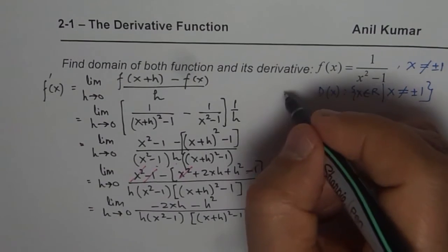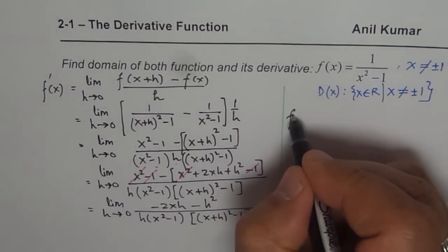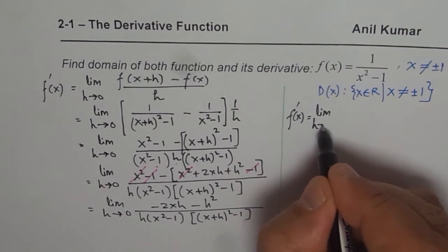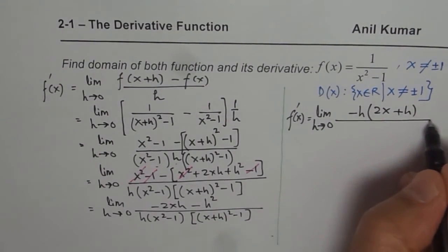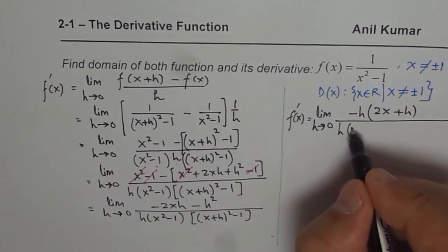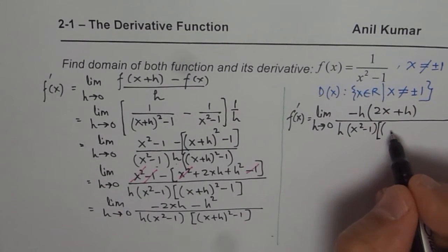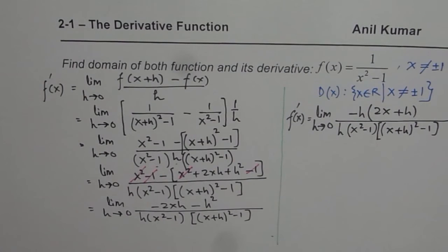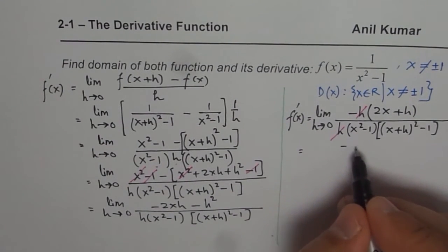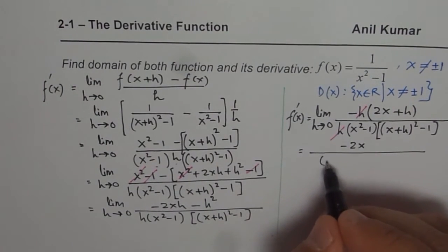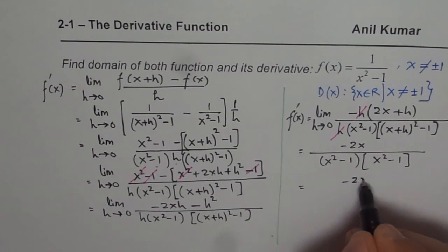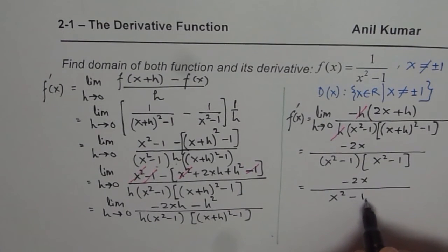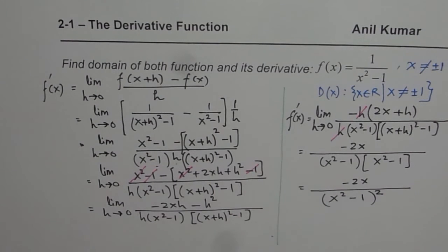Moving on to further simplify: f'(x) = limit as h→0 of [-(2x + h) · h] divided by [h · (x² - 1) · ((x+h)² - 1)]. The h cancels from numerator and denominator. Substituting h = 0, the numerator becomes -2x and the denominator becomes (x² - 1) · (x² - 1) = (x² - 1)². So the derivative is -2x / (x² - 1)².